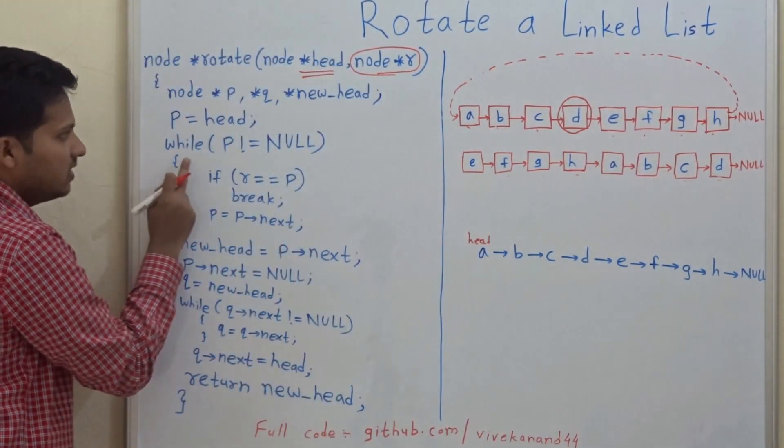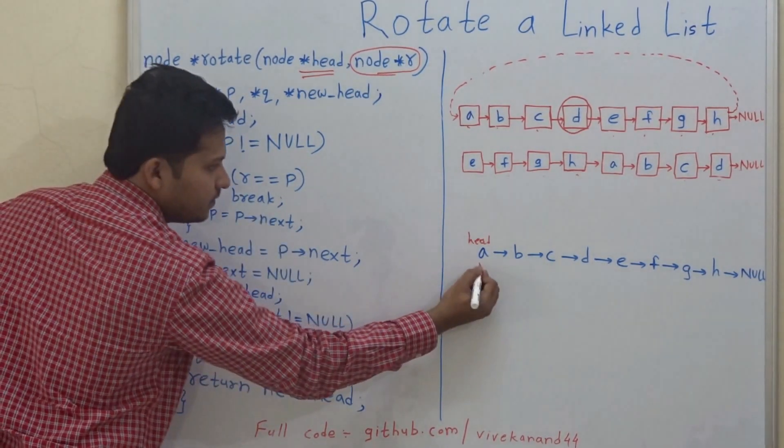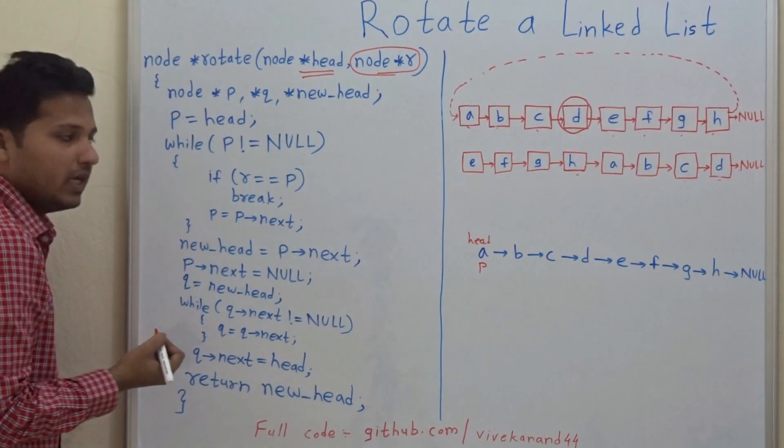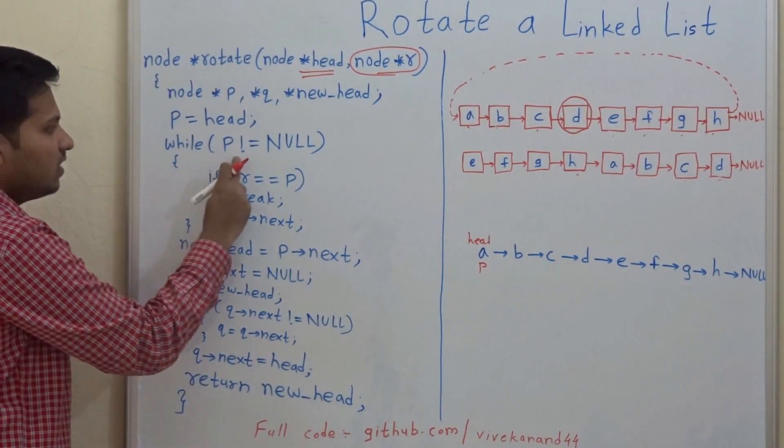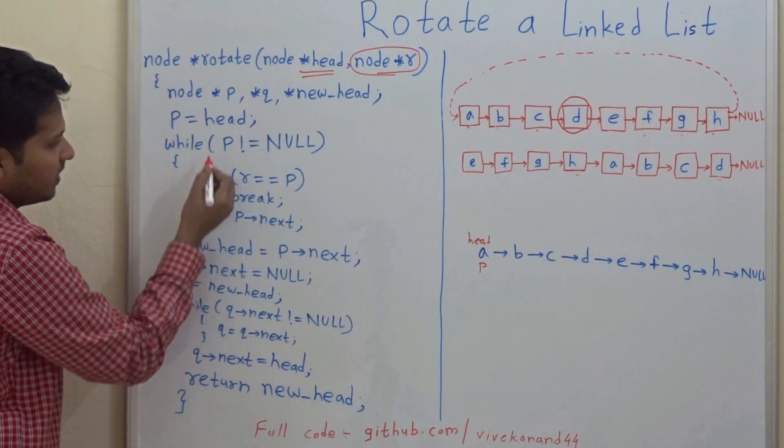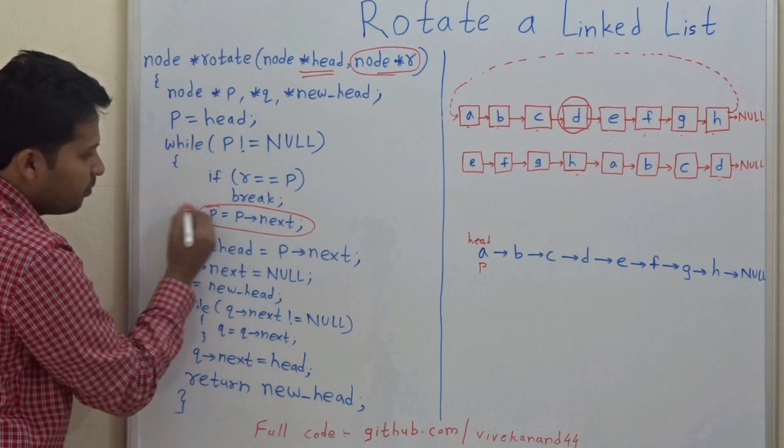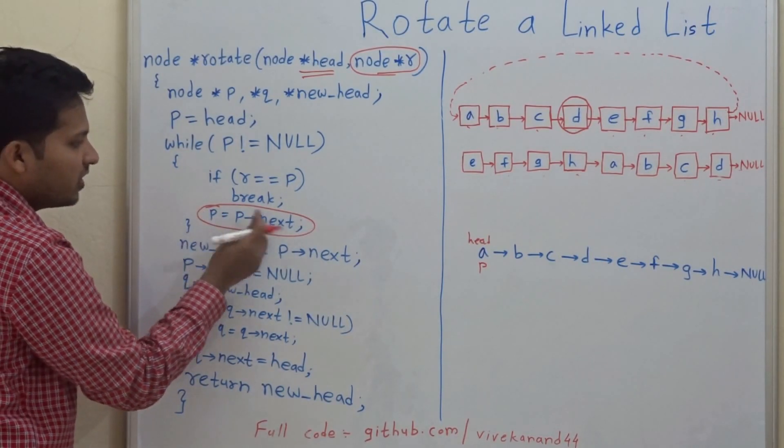In this code you can see P is the pointer which will point to head. So now P will reach to the rotating node R. While P is not equal to null, we will make P equal to P.next.